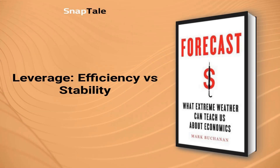Leverage: Efficiency Versus Stability. In 2007, the major banking crisis took the world by surprise, as many economists failed to foresee its severity. To prevent similar disasters, ongoing research was conducted using a virtual economic model. By simulating hedge funds and leveraging, researchers discovered that while leveraging increases market efficiency, it simultaneously decreases stability, leading to a higher frequency of extreme events. A balance between efficiency and stability is crucial to maintain equilibrium in the market.